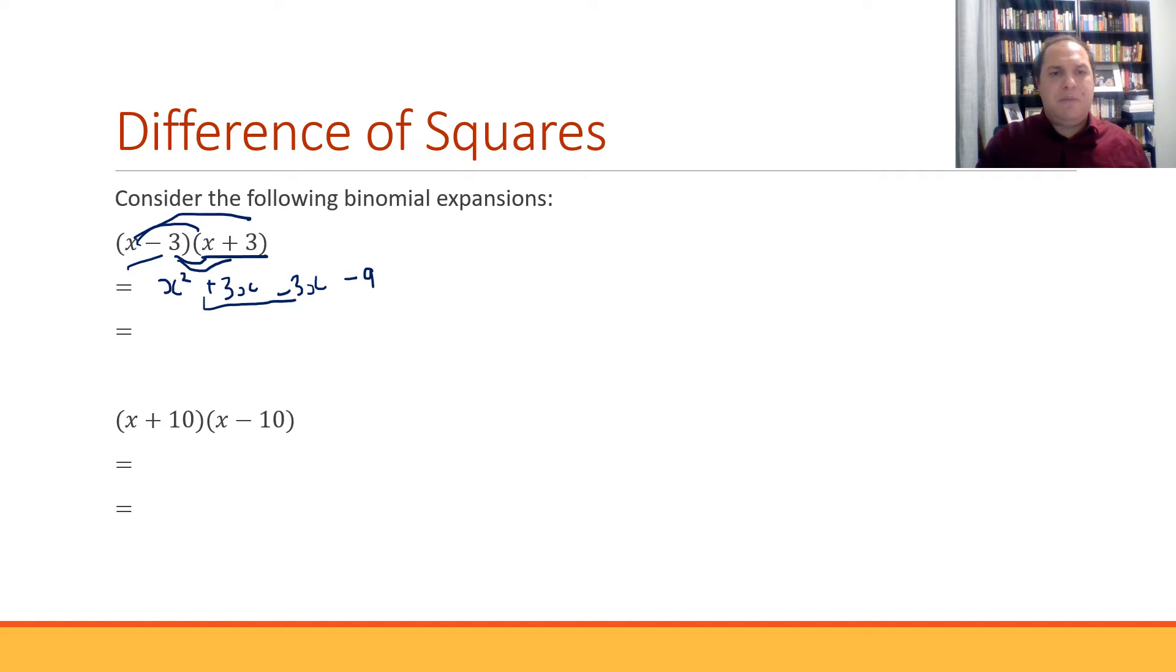Now look at these middle terms. One's positive 3x, one's negative 3x. They're just going to cancel each other out. 3x minus 3x, that just gives us zero. So all we're left with is x squared minus 9.